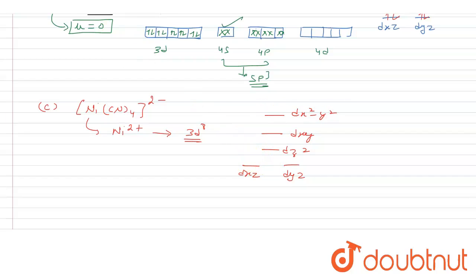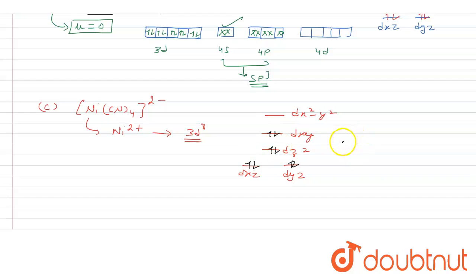Filling 8 electrons into the square planar diagram: 1, 2, 3, 4, 5, 6, 7, 8 — all electrons are paired. There are no unpaired electrons, so n = 0 and μ = 0 for this complex as well.